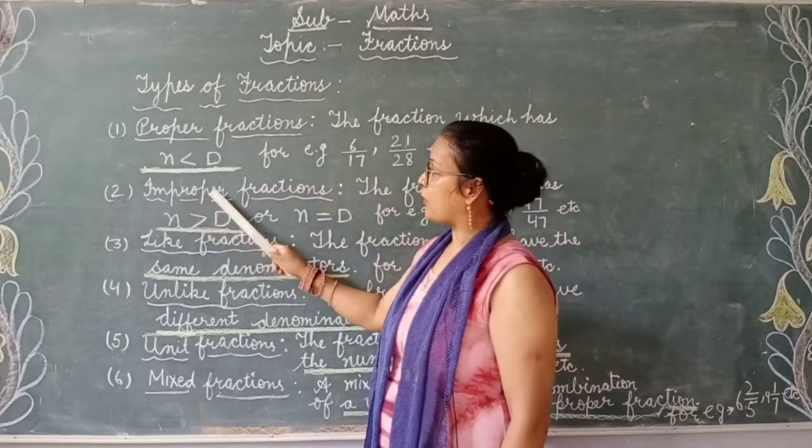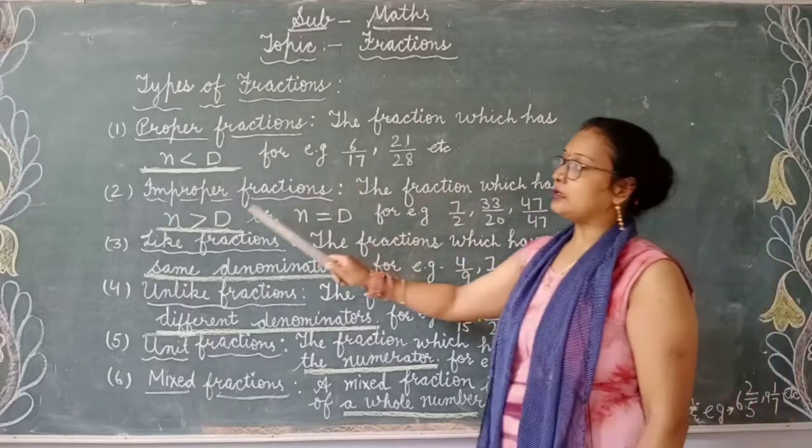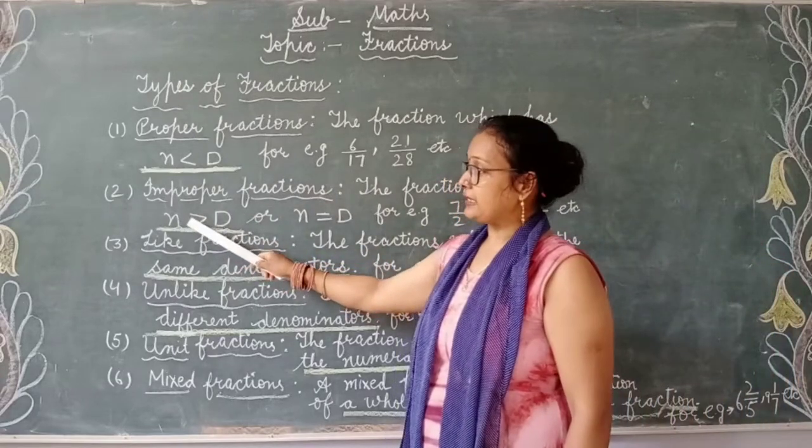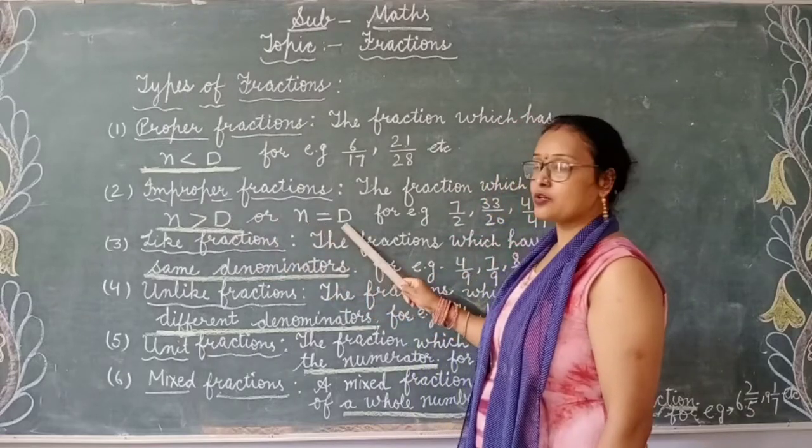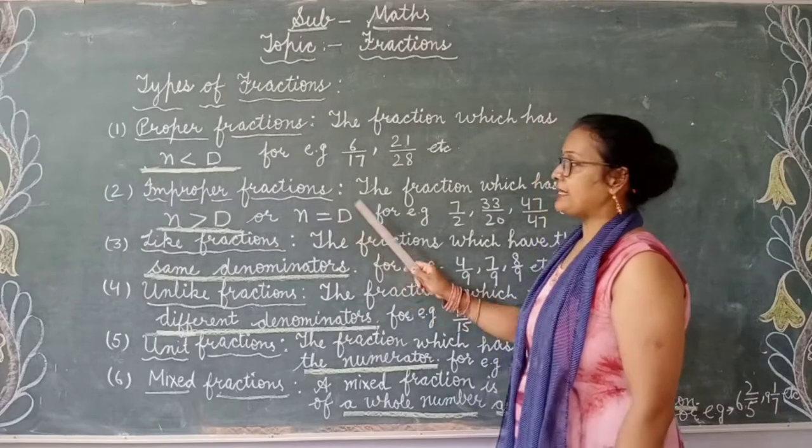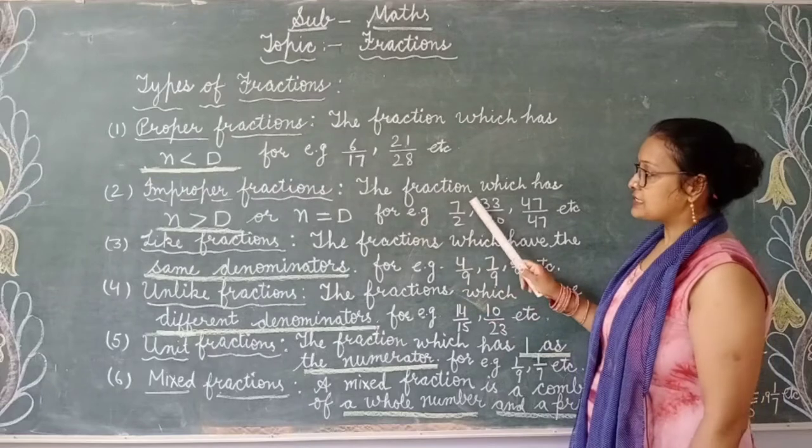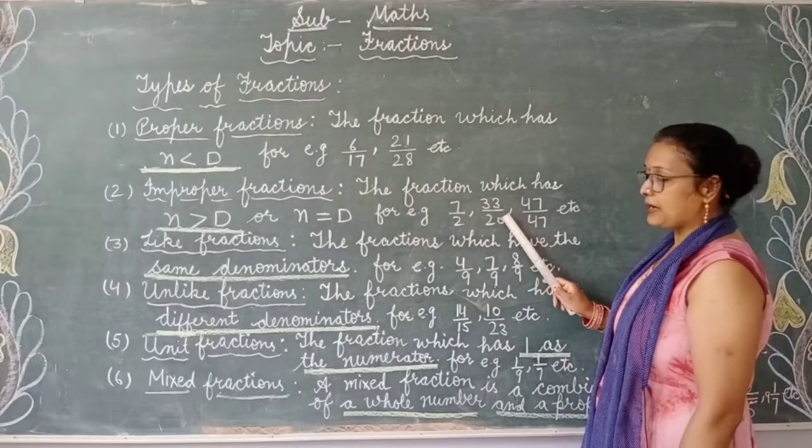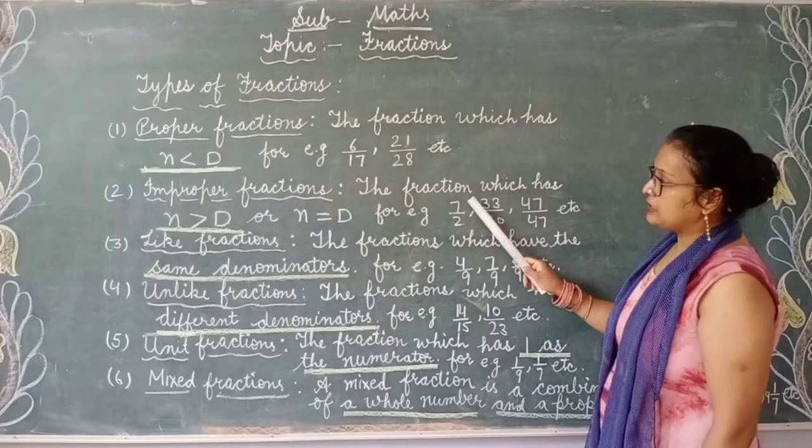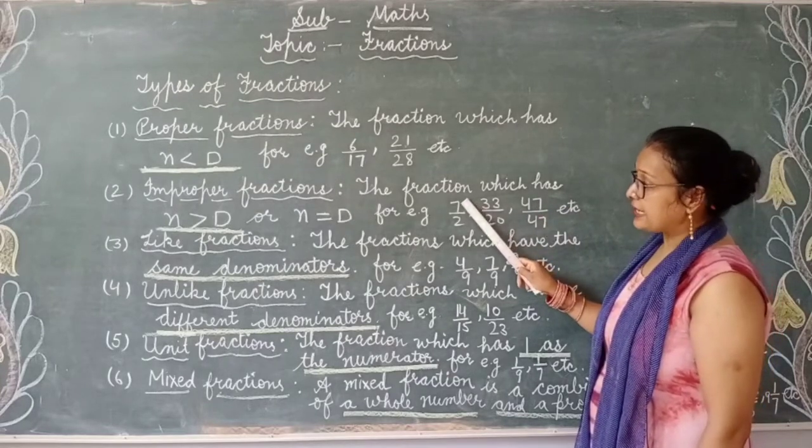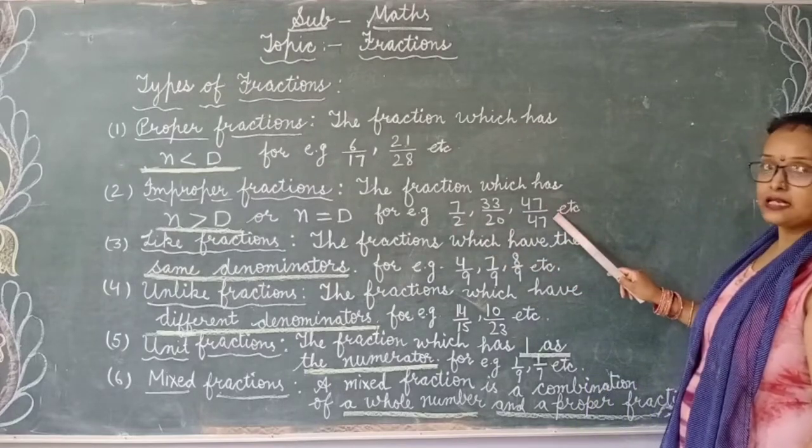Next is improper fraction. The fraction which has numerator greater than denominator or numerator equal to denominator is called improper fraction. For example, 7 by 2, 33 by 20, 47 by 47. Here numerator is greater than denominator. Here numerator and denominator are same.